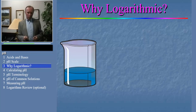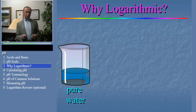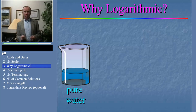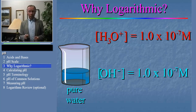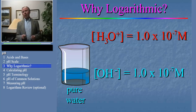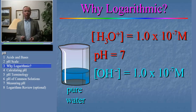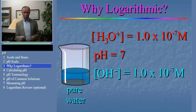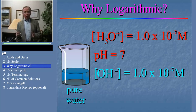For pure water, the number of positively charged hydronium ions equals the number of negatively charged hydroxide ions, and it turns out that this concentration is 1.0 times 10 to the minus 7th molar. That means the pH of pure water is 7. Since the concentration of hydroxide ions is the same as the concentration of hydronium ions, the pOH of pure water is also 7.